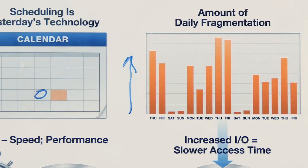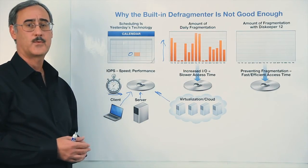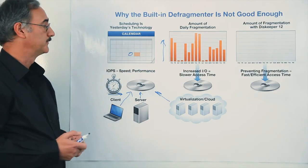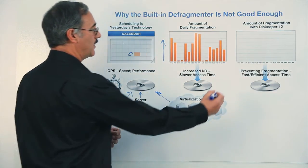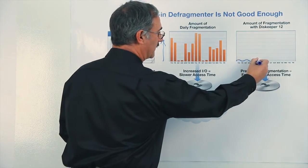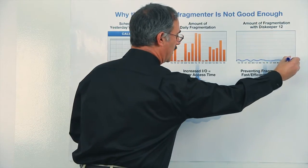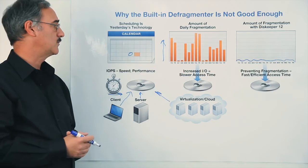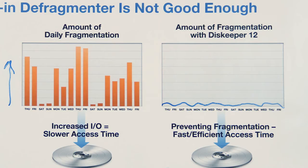Rather than going back and trying to fix the problem after it has already incurred a performance penalty for you, Conducive Technologies has created a product called Disk Keeper. Disk Keeper has a technology called Invisitasking and Intellirite, which helps prevent the vast majority of fragmentation from occurring without taking any additional system resources from the system or from other applications. This ensures that you get the least number of I.O.s to go to the storage and allows your application to run that much faster.